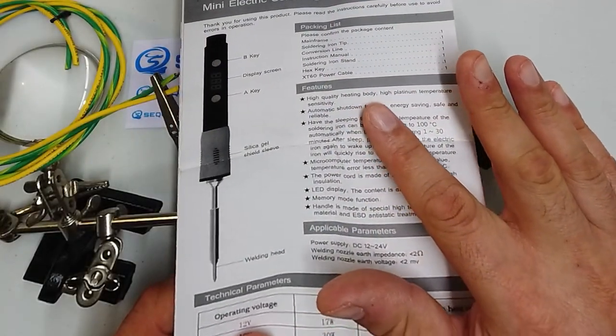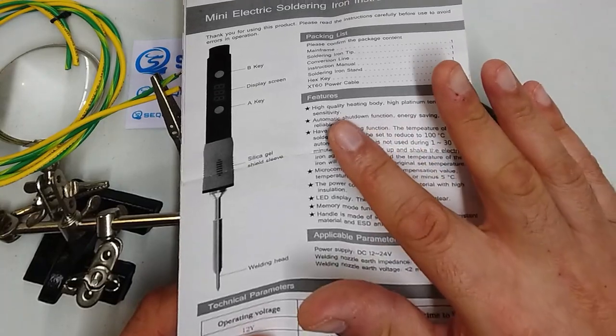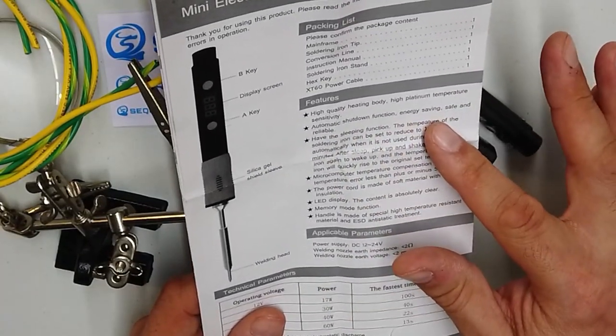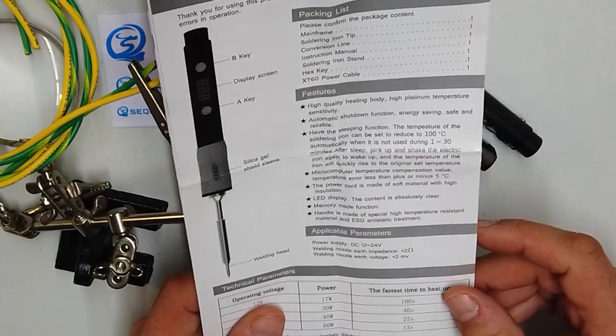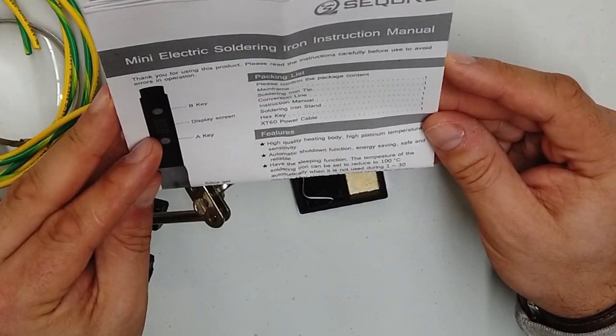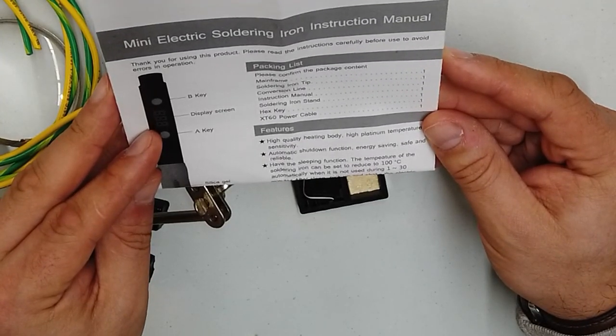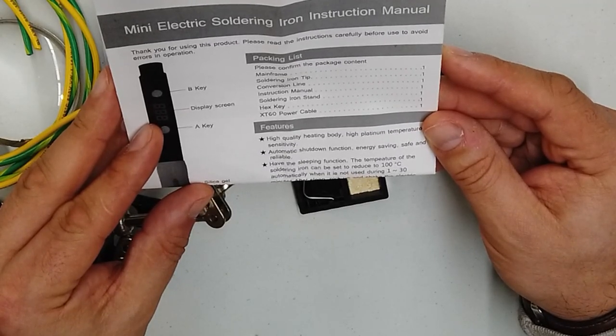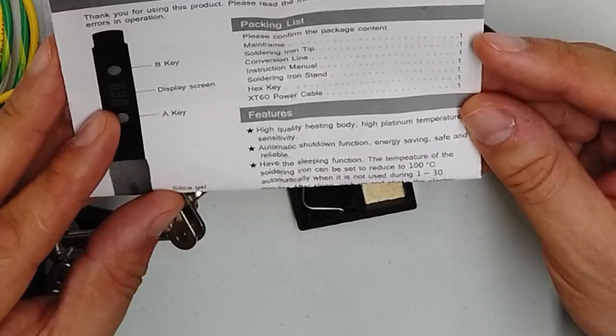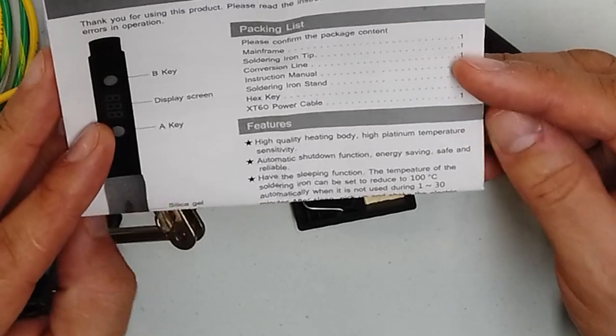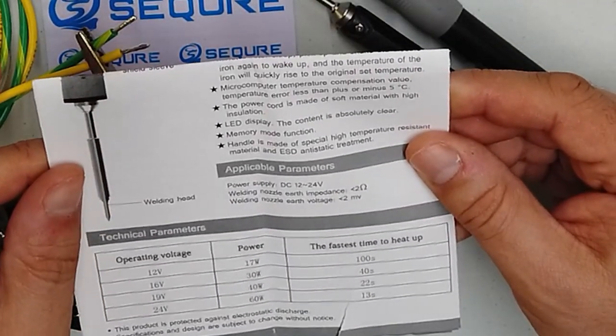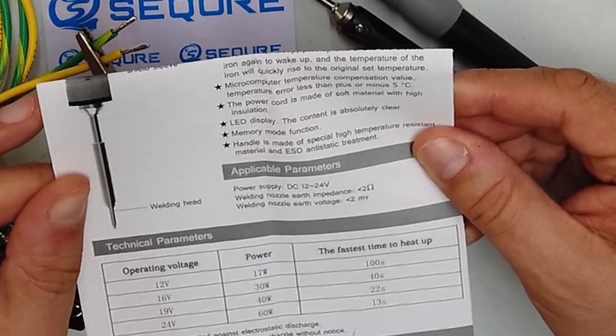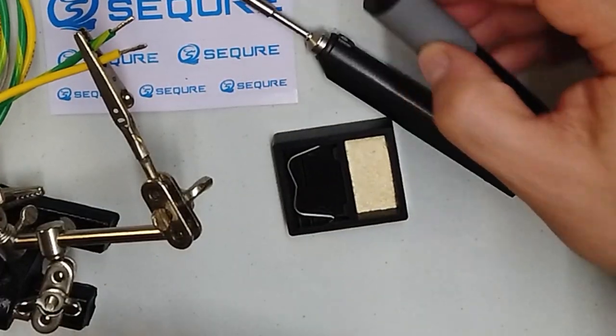It has a high quality heating body with high platinum temperature sensitivity. It has an automatic shutdown function. Energy saving. Safe and reliable. It has the sleeping function. The temperature of the soldering iron can be set to reduce to 100 degrees C automatically when it's not used for 1 to 30 minutes. After sleep, pick up and shake the electric iron again to wake it up. And the temperature will quickly rise to the original set temperature.